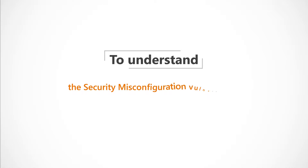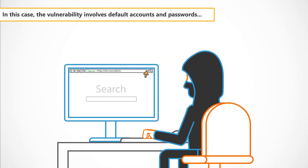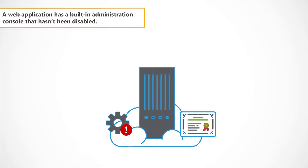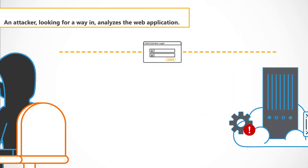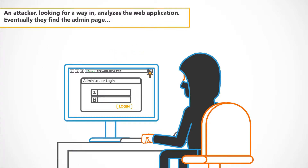To understand the security misconfiguration vulnerability, let's look at an example. In this case, the vulnerability involves default accounts and passwords. A web application has a built-in administration console that hasn't been disabled. Although the admin page is not linked to the main application, it can be found under /admin. An attacker looking for a way in analyzes the web application and eventually finds the admin page.